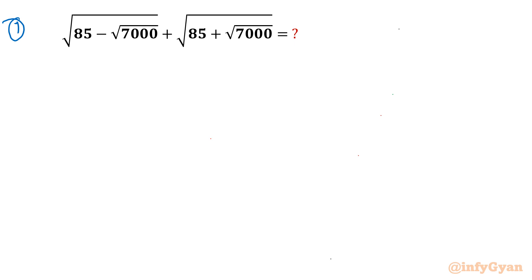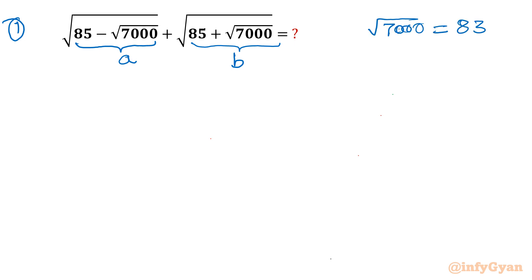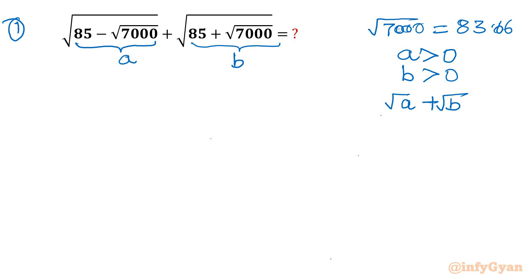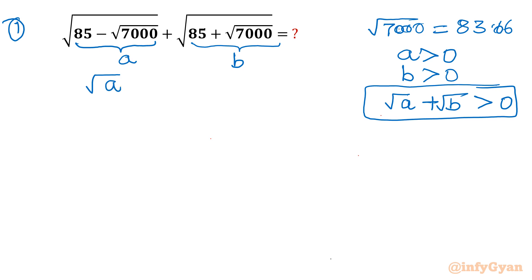Let's get started by considering the first term as a and 85 plus square root 7000 as b. Now, square root 7000 is approximately 83.66, so one conclusion is straightforward: a must be positive and b must be positive. Once a and b are positive, square root a plus square root b must always be positive.